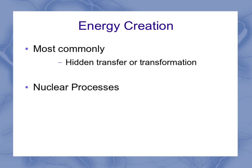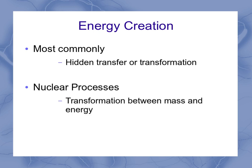Sometimes, though, you do have a nuclear process, like what's happening inside the sun to create that energy. In this case, there can be a transformation between mass and energy. Einstein was the one who figured this out and came up with his classic equation, E equals mc squared, where E is our energy, m is our mass, and they are related by c, the speed of light, squared.